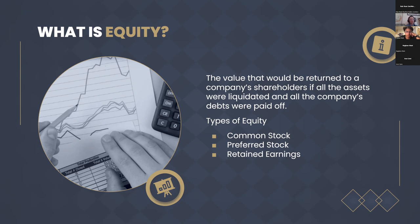There are different types of equity. The most well-known is common stock — ownership in a company. Shareholders who own stock generally get voting rights, one vote per share, which they can use to influence major company decisions including electing the board of directors. They can also have a claim on a portion of the company's profits, usually in the form of dividends. Investing in stocks can be high risk and high reward depending on the company. In the event of liquidation, common shareholders are last in line to receive assets — only after all debts and obligations have been paid.